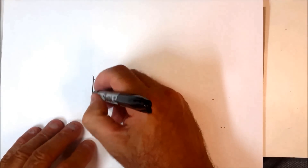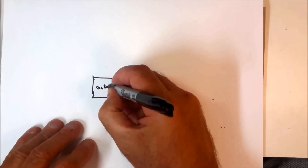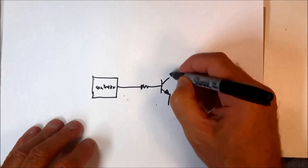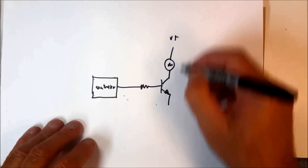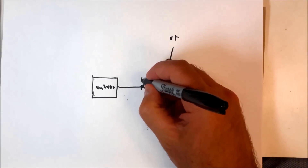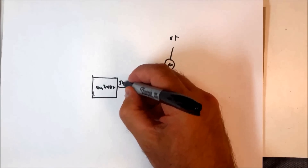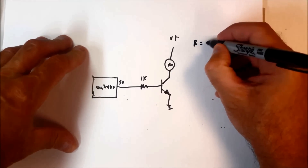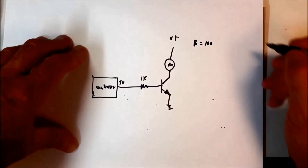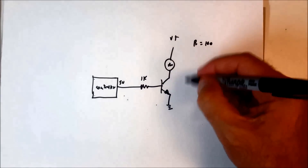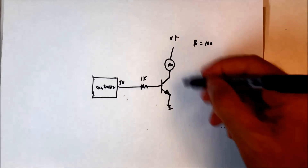Another problem you might encounter is a situation where you know what your base current is going to be and you need to find out whether the transistor is going to be saturated or not under those conditions. Let's look at a controller with a 1K resistor, and our controller puts out 5 volts when it's on. We have a transistor with a beta of 100, which is our current gain. This means that if we have 1 milliamp in the base, we're going to have 100 milliamps in the collector.